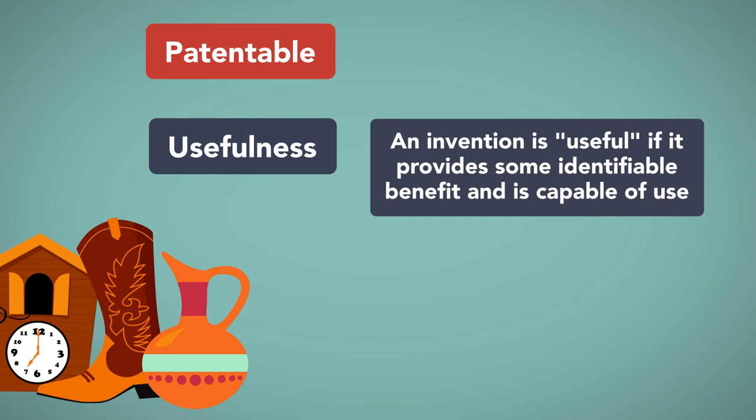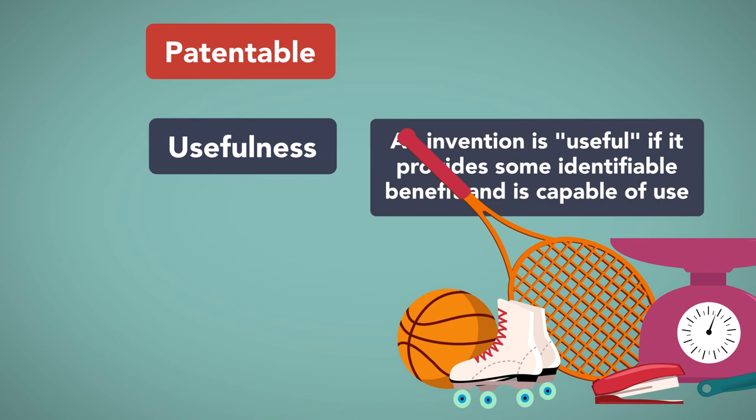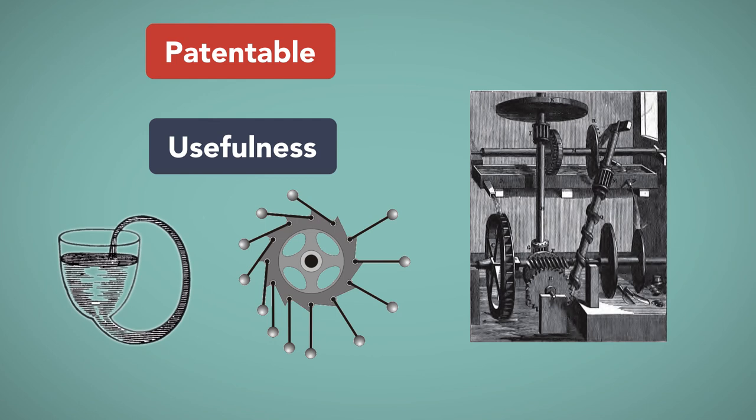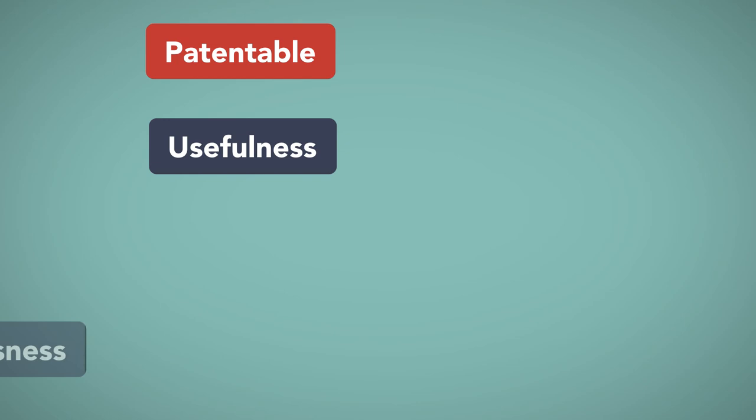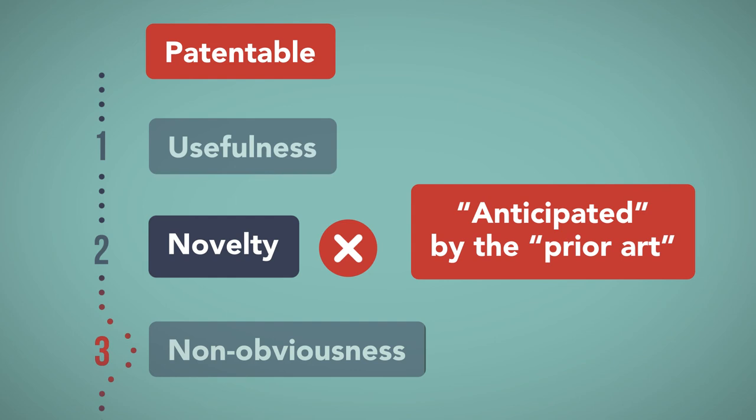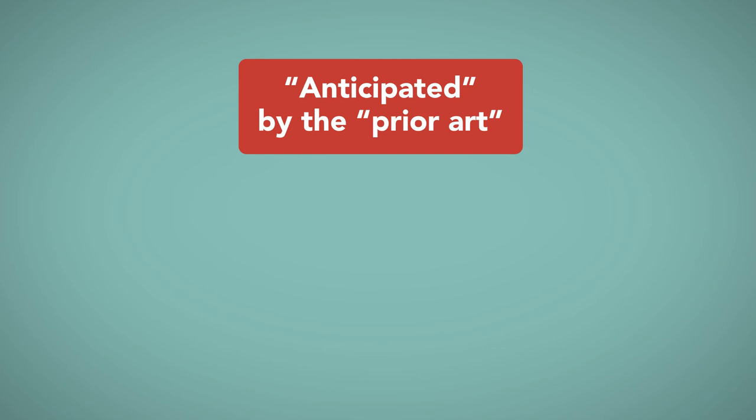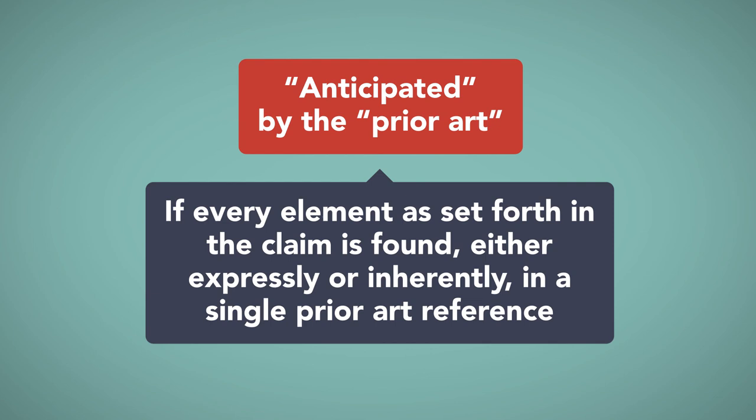Only a small degree of utility is required. Regardless, this doctrine has been used to exclude some inoperative inventions and hypothetical designs, such as perpetual motion machines. All patent applications must also claim new or novel inventions. A patent claim which is not novel is said to be anticipated by the prior art. A claim is anticipated and thus not eligible for protection if every element as set forth in the claim is found, either expressly or inherently, in a single prior art reference.